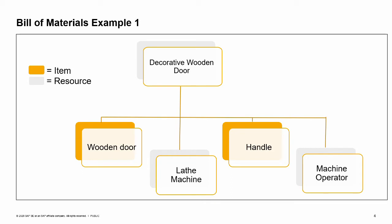When starting the production process, this Bill of Materials is copied into a production order. In real-life production, bills of materials often have several levels. In our example, the wooden door component can also be a Bill of Materials.